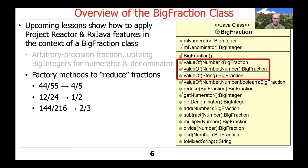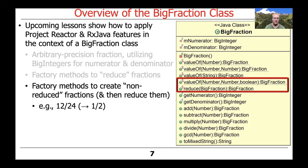There are a number of factory methods that can be used to create reduced fractions. For example, the valueOf method can take a fraction like 44/55 and automatically reduce it to 4/5, or 144/216 and have that be reduced by the valueOf method to the 2/3 fraction.